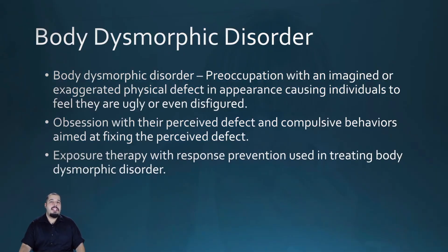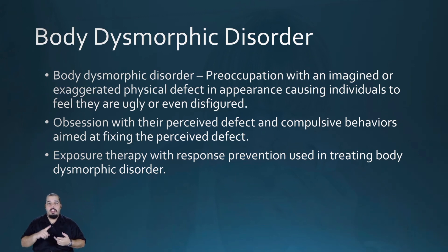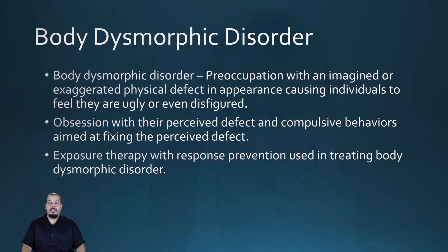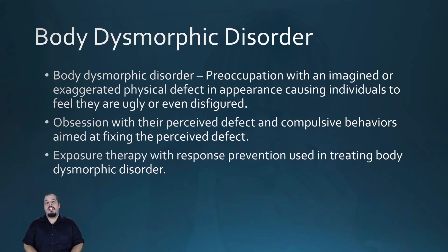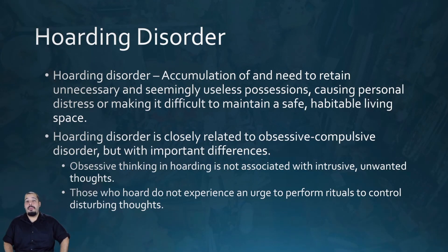People diagnosed with body dysmorphic disorder are preoccupied with an imagined or exaggerated physical defect in their appearance, such as skin blemishes, facial wrinkling, body moles or spots, or facial swelling. These preoccupations cause the individual to feel ugly or disfigured. Body dysmorphic disorder is classified within the obsessive-compulsive spectrum because people with this disorder become obsessed with their perceived defect and feel compelled to check themselves in the mirror or engage in compulsive behaviors. Exposure therapy with response prevention is often used in treatment.